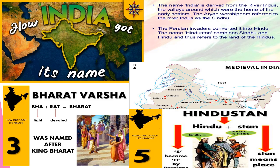Now the question arises: how did India get its name? Since we are talking about the medieval period in India, it is very important to know how India got its name. The name Bharata is derived from Bharata, the son of Dushyanta, a legendary ruler mentioned in the Mahabharata. The name India is derived from the river Indus, the valleys around which were the home of early settlers. The Aryan worshippers referred to the river Indus as the Sindhu. The Persian invaders converted it into Hindu. The name Hindustan combines Sindhu and Hindu, thus referring to the land of the Hindus.